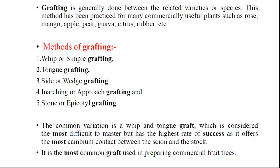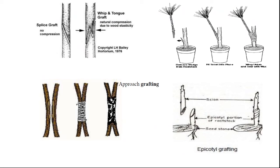Grafting is generally done between related varieties or species — we cannot graft any part of one plant onto an unrelated plant. Related varieties or species are required, meaning two species from a single genus or two varieties from a single species. For example, on a mango tree we can only graft another mango tree. There are several types of grafting: VIP or simple grafting, tongue grafting, side or wedge grafting, approach grafting, and stone or epicotyl grafting. In simple or VIP grafting, a slanting cut is taken on both the rootstock and scion, and they are joined so that their cambium is matched.